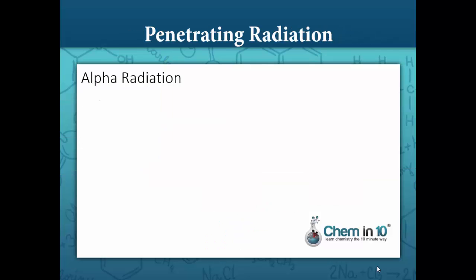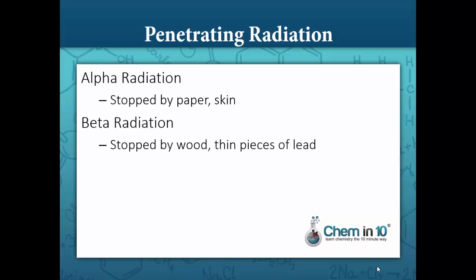Again, alpha radiation can be stopped by paper and skin, beta radiation can be stopped by wood and thin pieces of lead, and gamma radiation can only be stopped by thick pieces of lead.